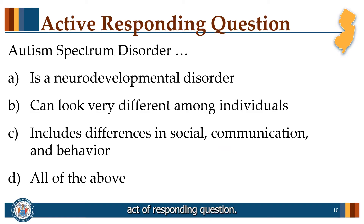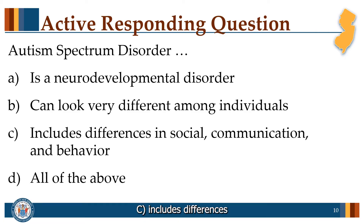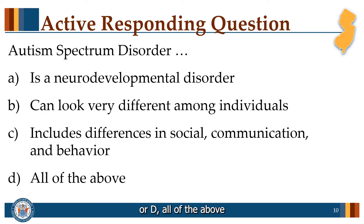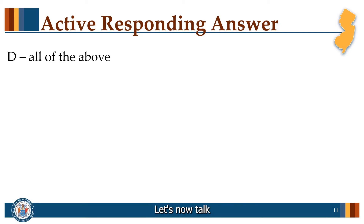Here's a quick active responding question. Autism Spectrum Disorder is: A, a neurodevelopmental disorder; B, can look very different among individuals; C, includes differences in social communication and behavior; or D, all of the above. The correct answer is D, all of the above. Let's now talk a little bit more about social communication and behavior.